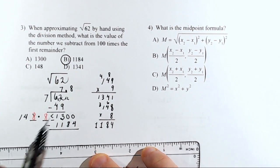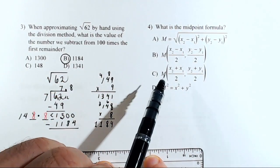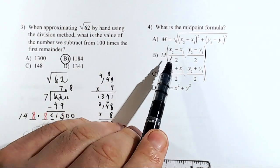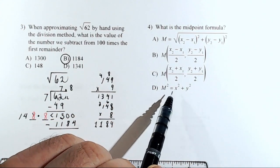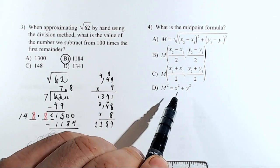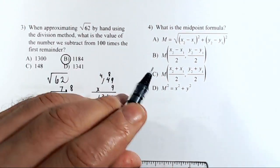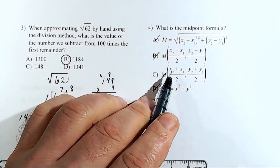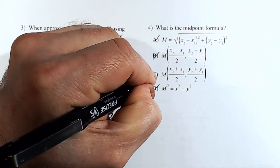Number four: what is the midpoint formula? The distance formula is not right. The midpoint formula is the average of the x's, comma, the average of the y's. We don't find the average through subtraction, so it's not B. The Pythagorean theorem rewritten is not right either. So the answer is C: x1 plus x2 over 2, and y1 plus y2 over 2 — the average of the x's and the average of the y's.